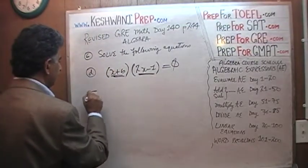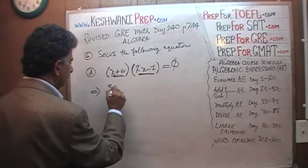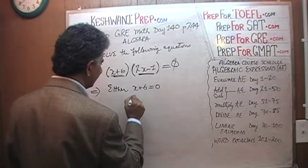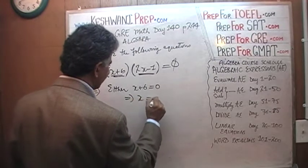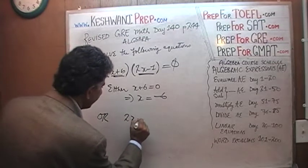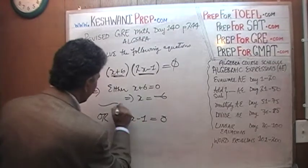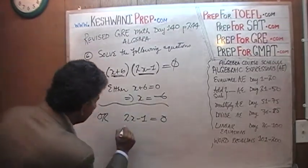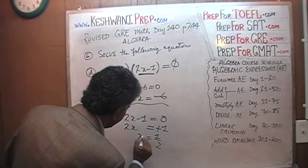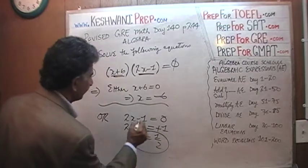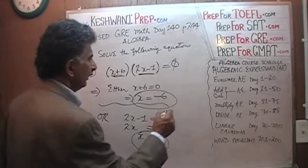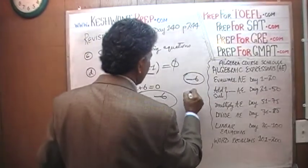This implies that either x plus 6 equals 0, in which case x equals negative 6, or 2x minus 1 equals 0, in which case 2x equals positive 1 and x equals one half. Those are our answers: x is either negative 6 or positive one half.